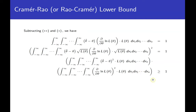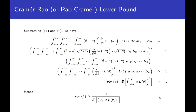The first integral is exactly E[(θ̂ − θ)²], which is the variance of theta-hat. The second integral is E[(∂log L/∂θ)²]. Since their product is ≥ 1, we conclude that Var(θ̂) ≥ 1/E[(∂log L/∂θ)²]. This is the Cramér-Rao inequality, and the right-hand side is the lower bound.